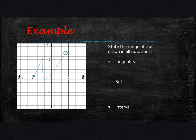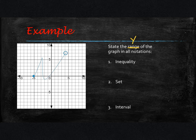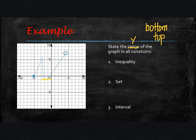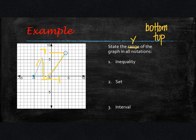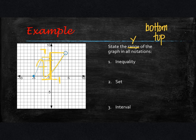Now let's look at the range. For the range, we're looking at the y values — I like to think of this as from the bottom up to the top. At the bottom of my graph, I have a point at negative 1. At the top of my graph — it doesn't matter what the graph is doing in between — the top value appears to be at positive 7. So this is a between statement because we have all the values included from negative 1 up to 7.